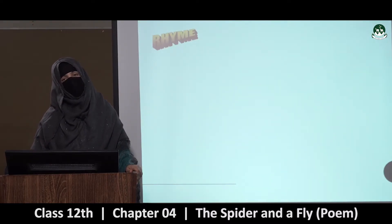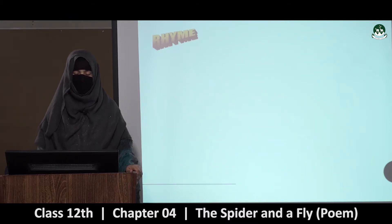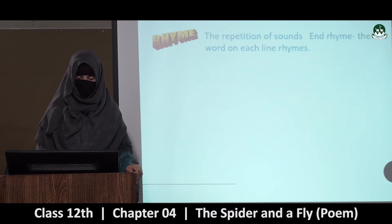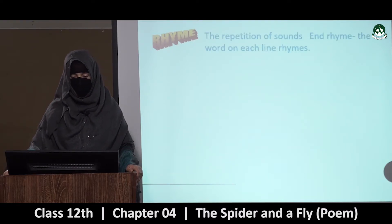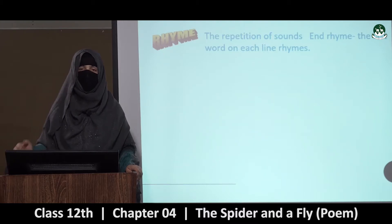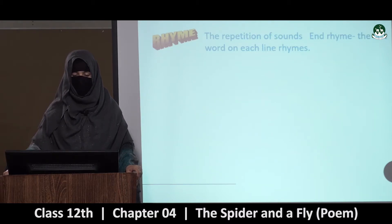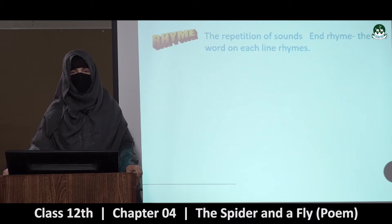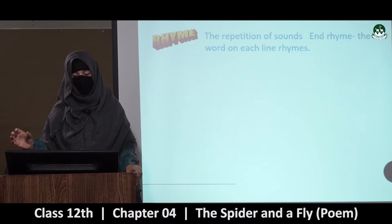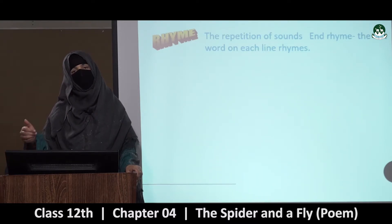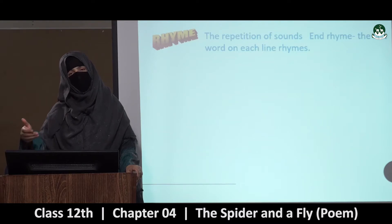Poem aapko pata hai ki woh rhyme se nikla hai. Poetry joh hai woh rhyme hoti hai. Toh rhyme kya hai? The repetition of sounds in rhyme — woh hi sound joh hai woh har line pe repeat hoti jahati hai. That is end rhyme: the last word on each line rhymes. Each line ka woh same rhyme pe hota hai.